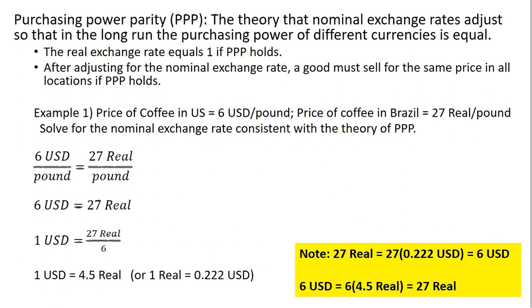Or just the reciprocal of that — one divided by 4.5 means one real will trade for 0.222 U.S. dollars. Given this implied nominal exchange rate of one U.S. dollar equals 4.5 real, we can take the pound of coffee in Brazil at 27 real. One real equals 0.222 U.S. dollars, so 27 times 0.2222 equals six U.S. dollars, which is equivalent to what a pound of coffee is priced at in the U.S. Or vice versa, six U.S. dollars given this exchange rate is equivalent to 27 real, since one U.S. dollar equals 4.5 real — so six dollars converts to 27 Brazilian real.